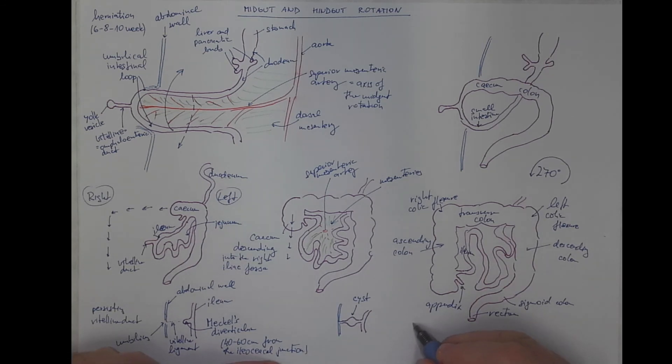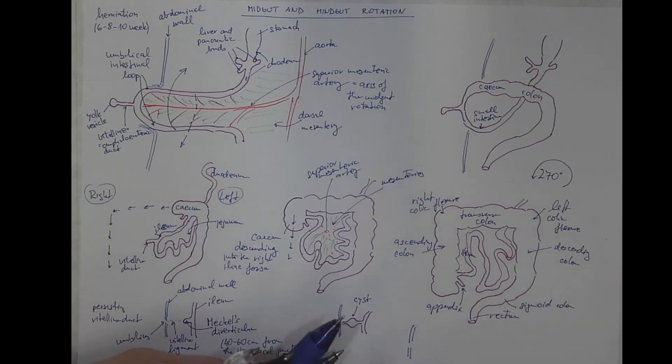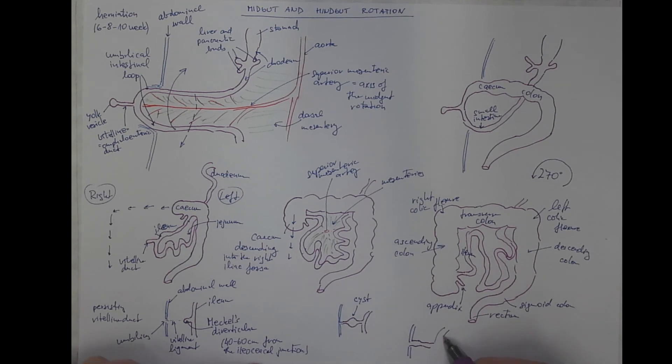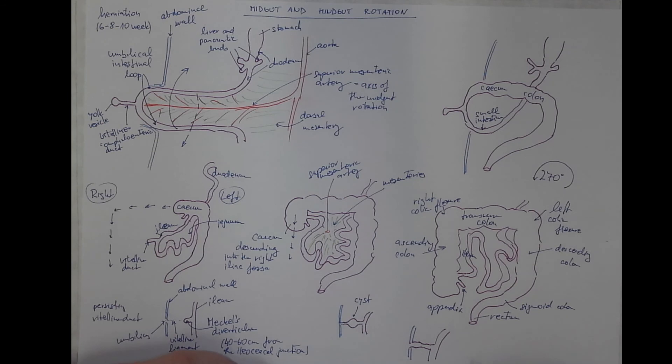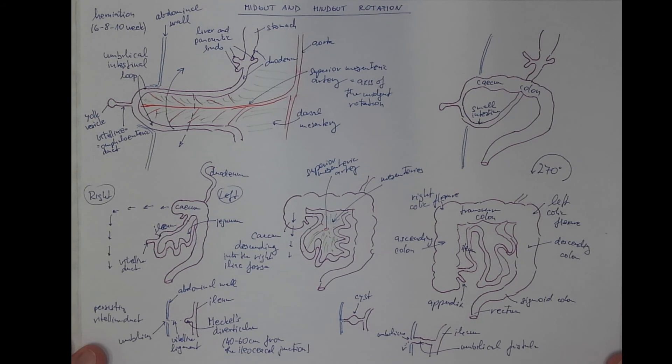And the most severe condition would be completely persisting connection between the umbilicus and the vitelline duct. So there will be an umbilical fistula connecting the ileum with the umbilicus. So the chyme will come out here from the ileum outside the body wall. So this can happen when the vitelline duct does not completely, it's not completely resorbed.